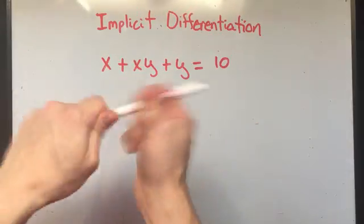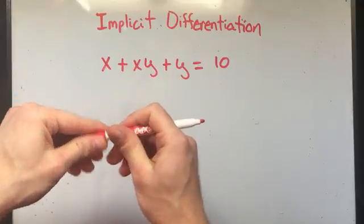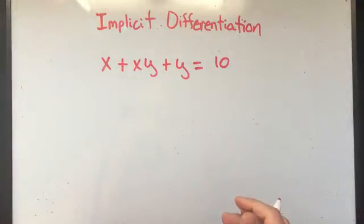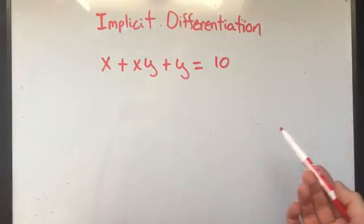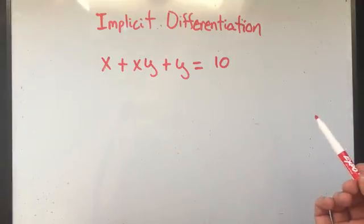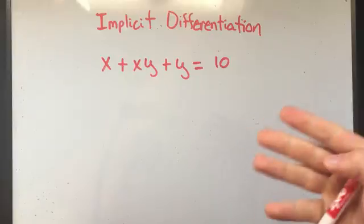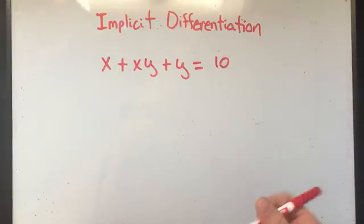So we're going to do the derivative all the ways we've been doing it, except whenever you take the derivative of y, we have to multiply by y prime by the chain rule. Or you might have seen dy over dx, but I'm just going to use y prime.